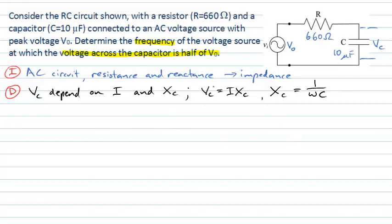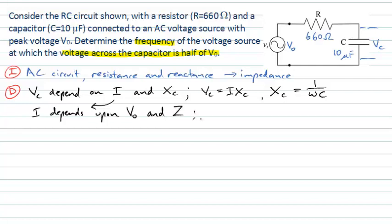We know what the voltage across the capacitor depends upon, but importantly this current is also going to depend upon some properties of our circuit. It depends upon the applied voltage — we'll characterise that by its peak value V0, as given by the question — and the response of the circuit, which is not just the resistance but also the impedance Z. That relationship is: the applied voltage equals the current multiplied by the impedance Z of the circuit.